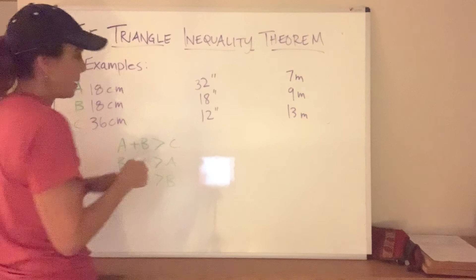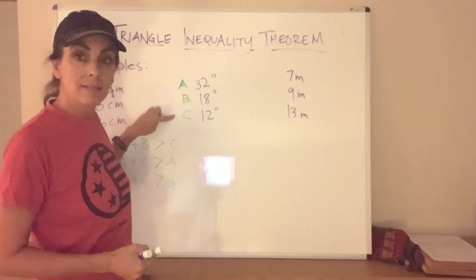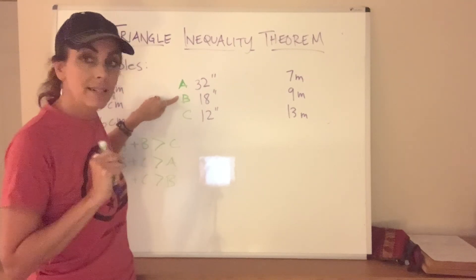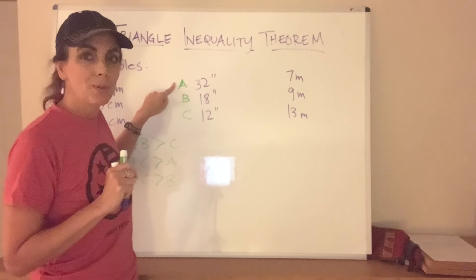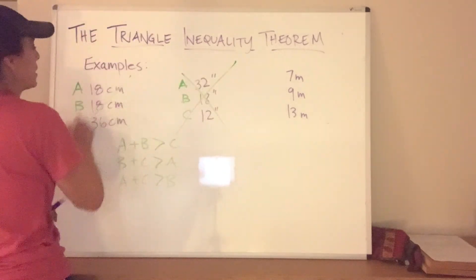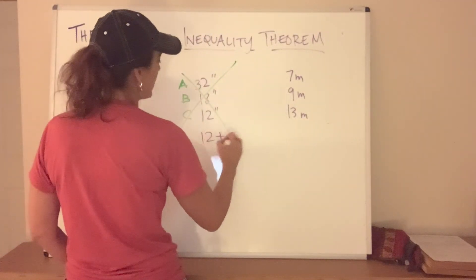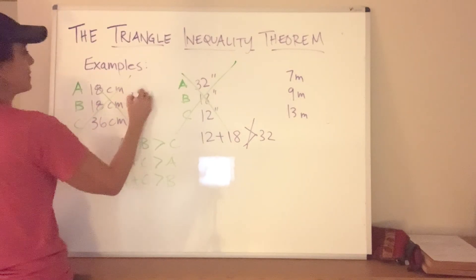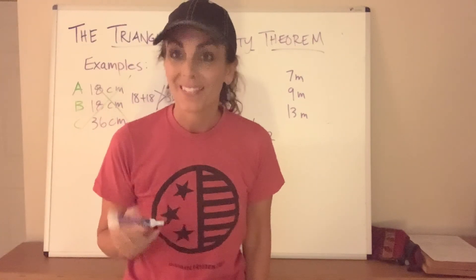Second example — A, B, C. Is A + B bigger than C? Yes. Is A + C bigger than B? Yes. Is B + C bigger than A? Nope. So we have to reject this one as well. To justify: 12 + 18 is not greater than 32, and 18 + 18 is not greater than 36. Did you even know that was a symbol — the 'not greater than'? Both examples are a big no.